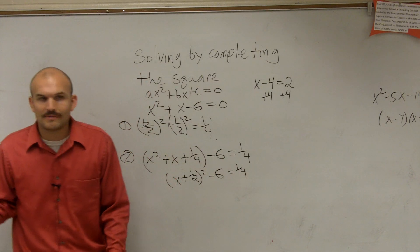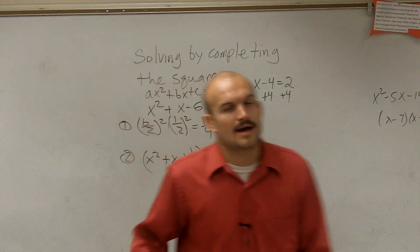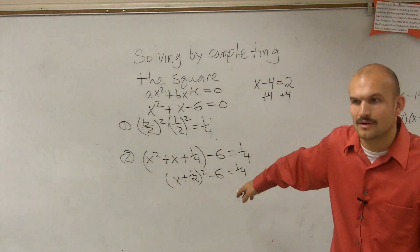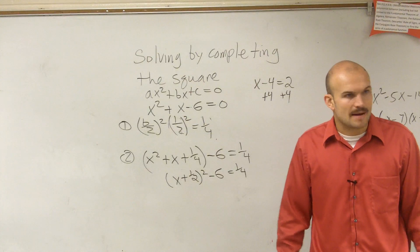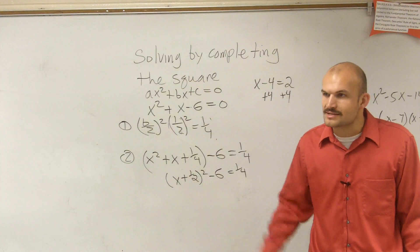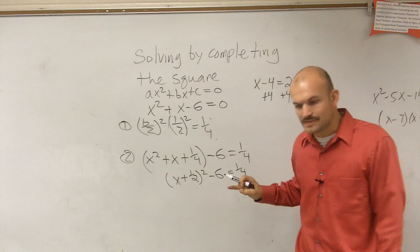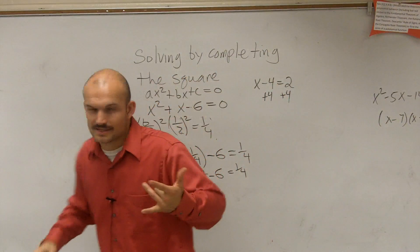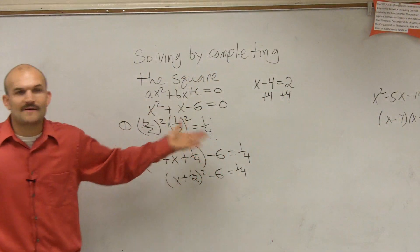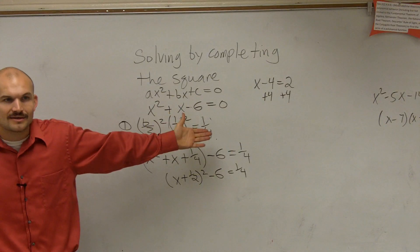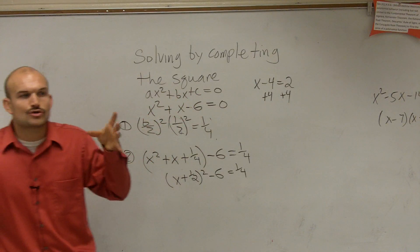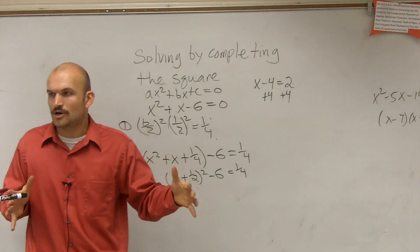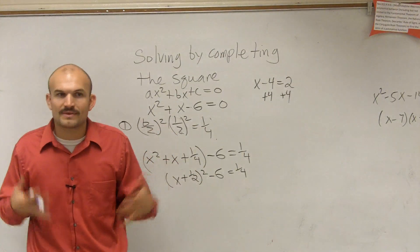So therefore, I have minus 6 equals 1 fourth. Now, the reason why we complete the square, ladies and gentlemen, how many x's do I have? One. Can I solve with my x's by using my inverse operations? Yeah. Since I only have one x, I can use my inverse operations. If I had two x's, like I did up here, I'd probably have to do my factoring. But we couldn't factor it. So what we can do, what completed square allows us to do, is allows us to create a perfect square trinomial so we can solve without factoring.